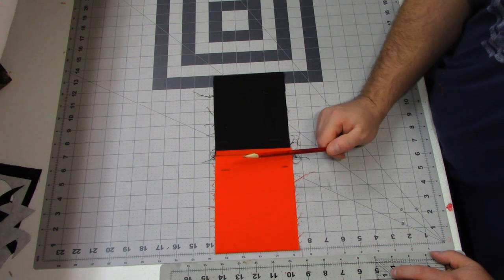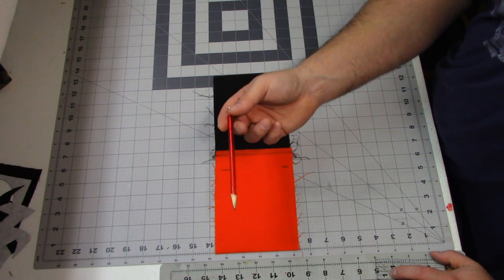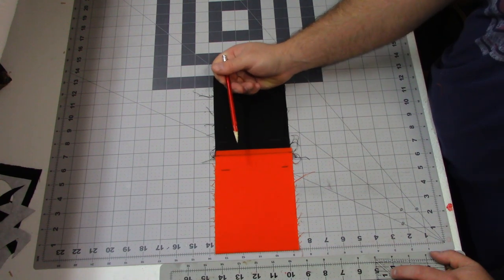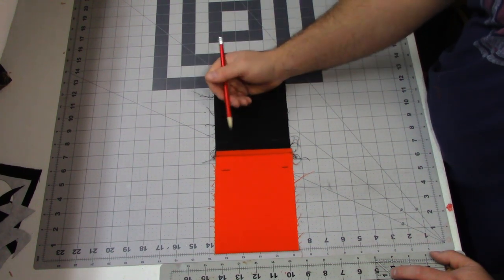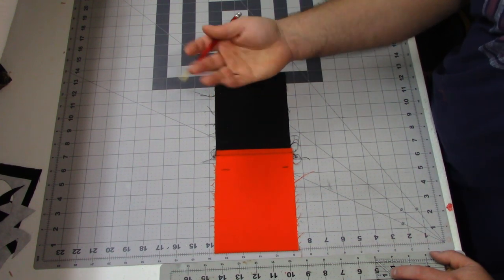Now ideally, you would want to use a disappearing marker or something like that. But if you don't have one, a pencil will work just fine. However, if you're doing the white or the green, let's say, your pencil will show through. So just do a really light line. You could also just use chalk.